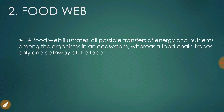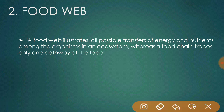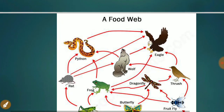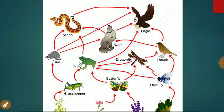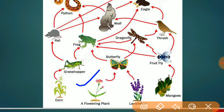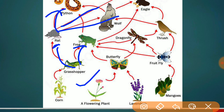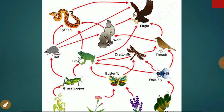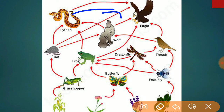The second concept is food web. A food web illustrates all possible transfers of energy and nutrients among organisms in an ecosystem, whereas a food chain traces only one pathway. Different food chains together make the food web. For example: corn is eaten by grasshopper, grasshopper is eaten by frog and rat, rat is eaten by python and snake — forming a web of energy transformation.